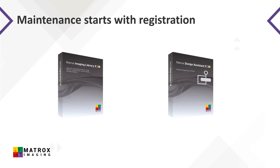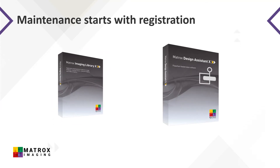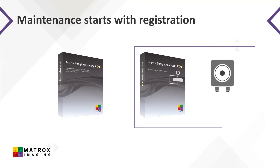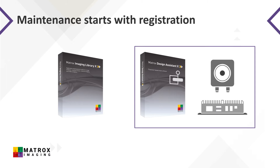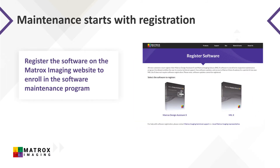Once you purchase the Matrox Imaging Library or Matrox Design Assistant development kit, or a smart camera or vision controller bundled with Matrox Design Assistant, it's important to register the software on the Matrox Imaging website to enroll in the software maintenance program. Enrolling in the maintenance program gives you access to all relevant updates. Note that there is no software maintenance program for MIL-Lite — MIL-Lite updates are freely accessible for all MIL-Lite users.